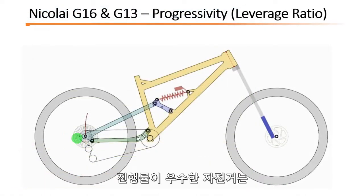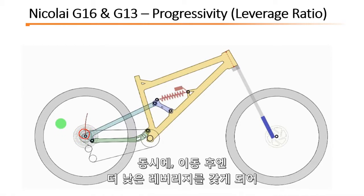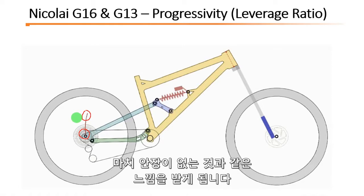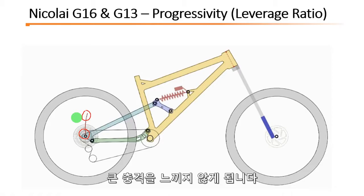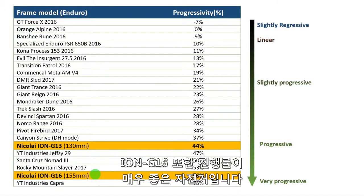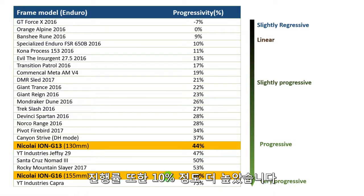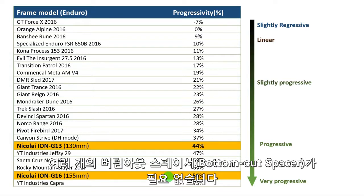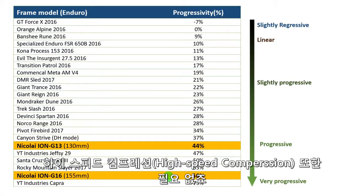A progressive bike means you have high leverage at the initial travel — very smooth, very sensitive suspension. And at the same time you have lower leverage at the end of the travel, so you get the bottomless feeling. On big jumps and bigger impacts, the suspension will be very smooth at the end of the travel and you won't feel that harsh impact. The G16 is also very progressive, and with the higher travel version you get around 10% more progressivity. On both bikes you won't need many bottom-out spacers or high-speed compression to avoid those annoying harsh bottom-outs.